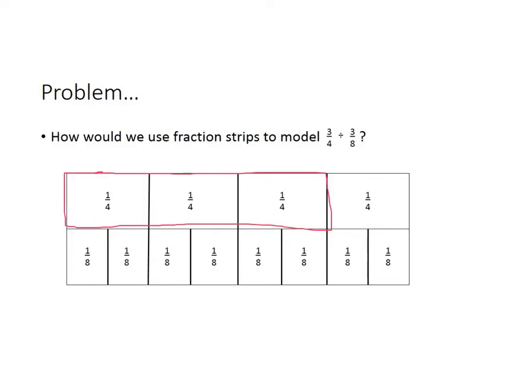This time, we're going to look at 3 eighths in a group. So there's one group of 3 eighths, and there's another group of 3 eighths. So how many groups of 3 eighths were there in the 3 fourths? Well, there's 2. So 3 fourths divided by 3 eighths would be 2.